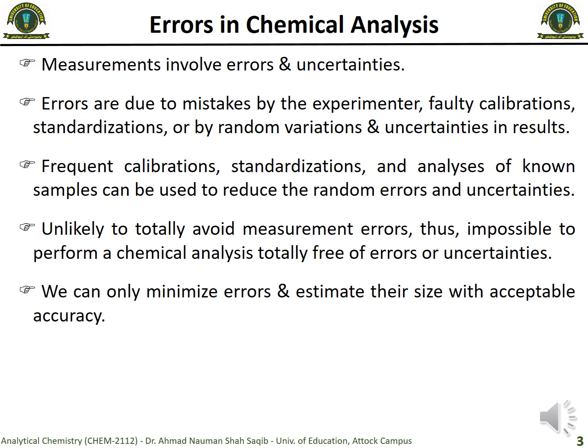Errors can be of multiple types. For example, it can be due to the negligence of experimenters performing the analysis. If there is some mistake in the method, that will definitely result in inaccurate analysis results and the information will not be reliable. Similarly, if you calibrate an instrument before analysis and the calibration is not done properly, that will also result in errors. Also, if you standardize solutions and those solutions are not standardized well, the inaccurate information provided to the instrument will also cause errors in chemical analysis.